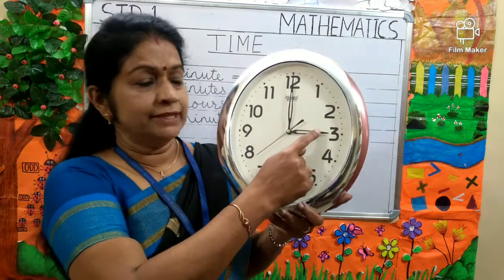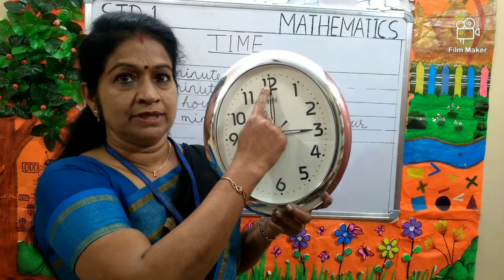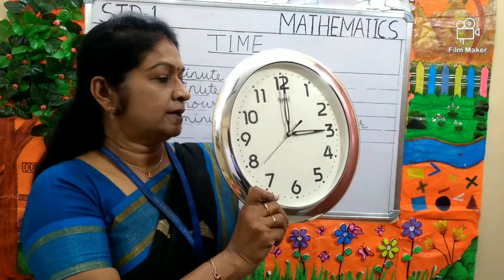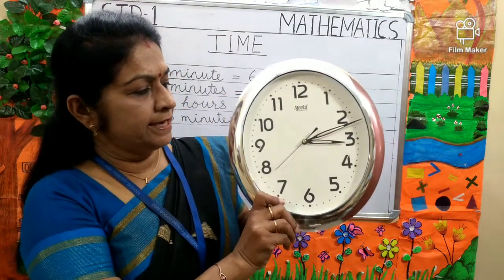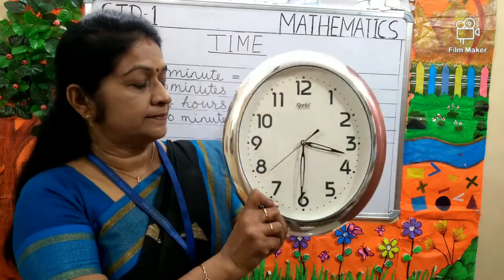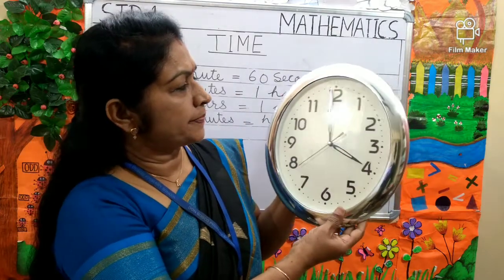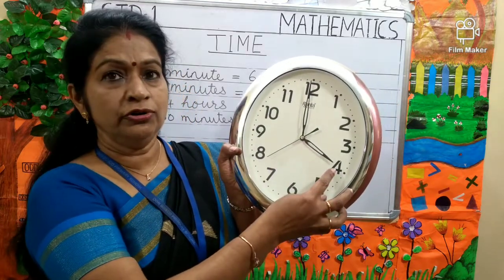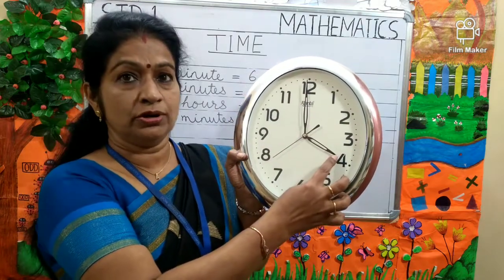See the time here. The hour hand is on 3 and the minute hand is on 12. So, the time is 3 o'clock. Now, I am moving the minute hand round the clock. Now the hour hand is on 4 and the minute hand is on 12. So, the time is 4 o'clock.